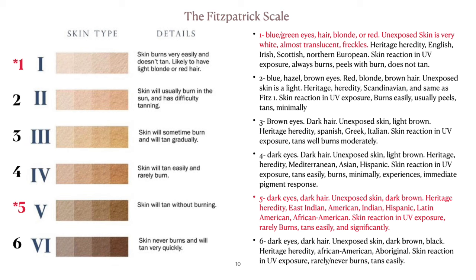Fitzpatrick Type 1: blue or green eyes, hair is usually blonde or red, unexposed skin is very white, almost translucent, and freckles are very common. Heritage is typically English, Irish, Scottish, or Northern European. Skin reaction to UV exposure: this type always burns, peels with the burn, and does not tan. If you are a Type 1, you must always wear SPF — nothing under 50.